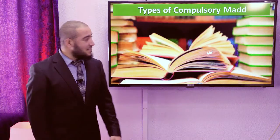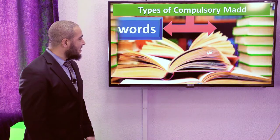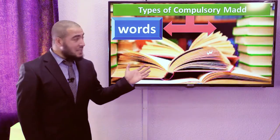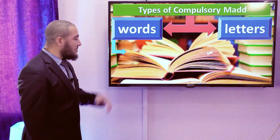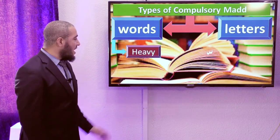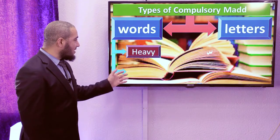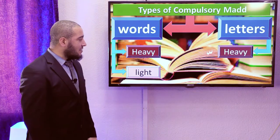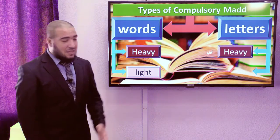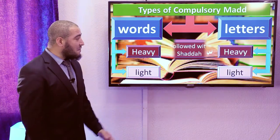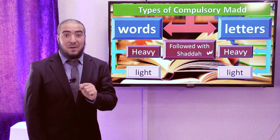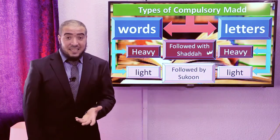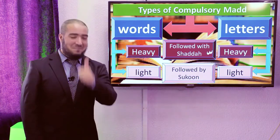Types of Compulsory Mad: as mentioned, it occurs in words and in letters. There are two shapes or two types for it — Heavy and Light — in words, and also the same in letters, Heavy and Light. Heavy is when the letter of Mad is followed by a Shadda above the next letter. If the next letter does not have a Shadda, it will be Light.